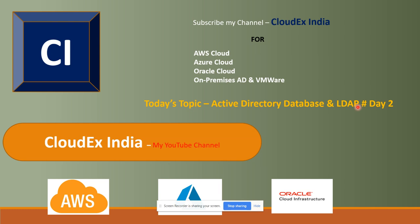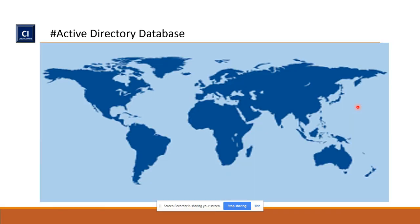Suppose you have configured a domain called cloudxindia.local and there are multiple sites. Once you promote any domain controller and create the domain services on a system, the domain services will create two folders: one is NTDS and the other is SYSVOL. Inside the NTDS folder, a file is created called ntds.dit.